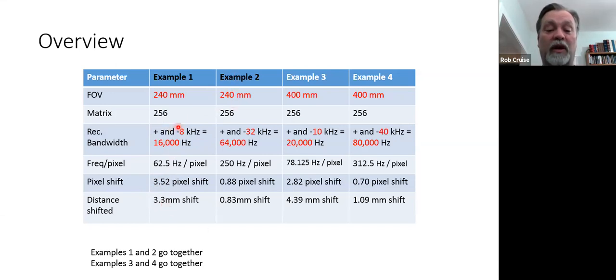So example two, we went from a narrow bandwidth for example one to a wide bandwidth on example two. So now we're at 32 kilohertz, which goes to 64 kilohertz, which translates to 64,000 Hertz. We have a 0.88 pixel shift, which is a lot better than 3.5, and we have a 0.83 millimeter, which is much better than your 3.3 millimeter. I'd much rather have this. Now, the negative of example two is the signal to noise ratio will go down because you are including a lot more noise in your resultant received signal you're getting back from the patient.